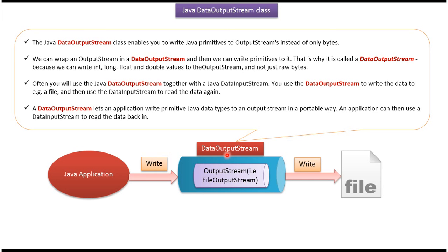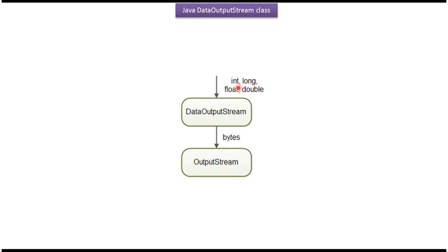Usually DataOutputStream is used together with DataInputStream. Using DataOutputStream we can write data to a file, and later using DataInputStream we can read data from a file. As discussed, using DataOutputStream we can write primitive data types like int, long, float, and double to an output stream.